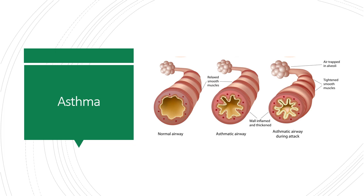Nasal polyps are part of what we call the allergic triad — people who have asthma, nasal polyps, and an aspirin allergy. Food and drug allergies and even emotional responses can trigger an asthma attack. Control medications should be taken daily, and rescue medications such as short-acting beta agonists or bronchodilators are used for asthma exacerbation. Ensure the patient has a rescue inhaler and a spacer and knows how to use them.